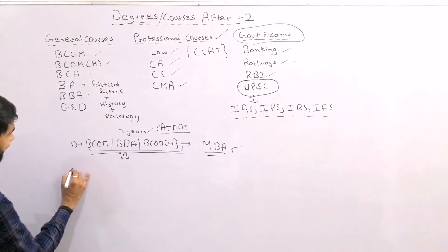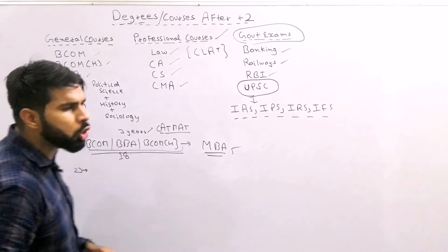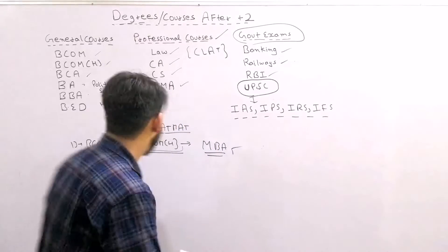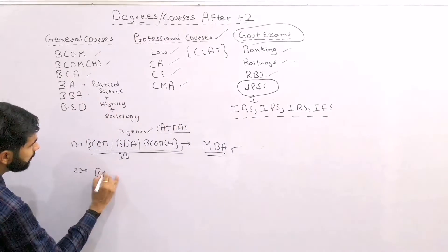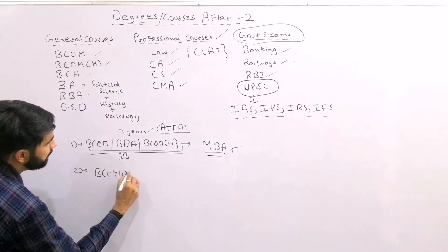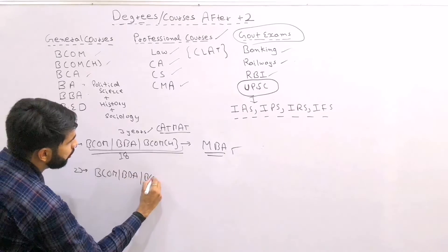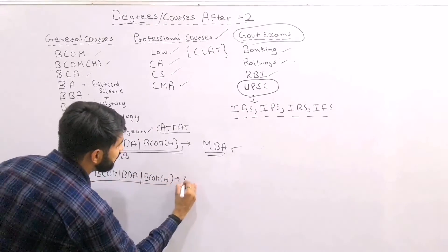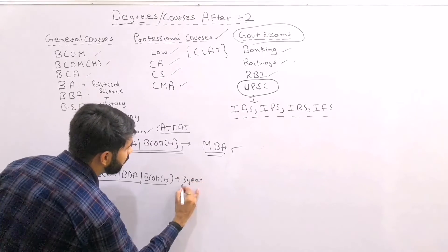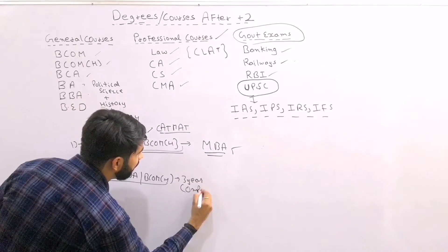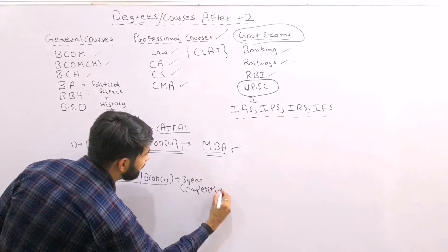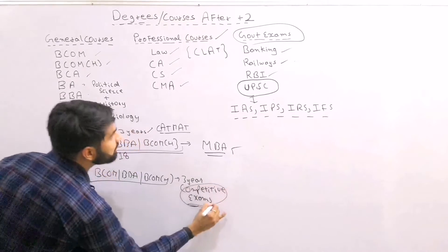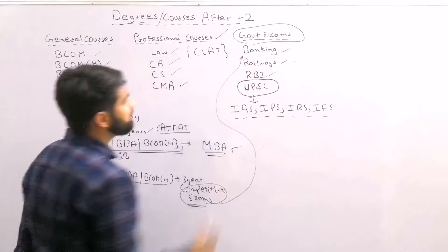The second line — and a most economical line — is: while doing BCom, BBA, or BCom Honors, side by side for three years, prepare for competitive exams — that means government exams. This dual approach is very effective.